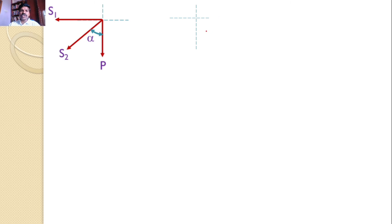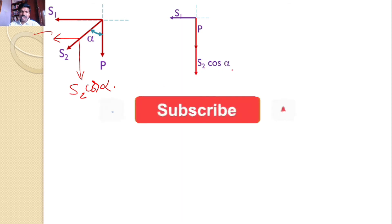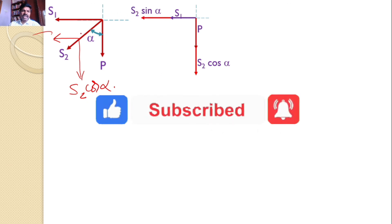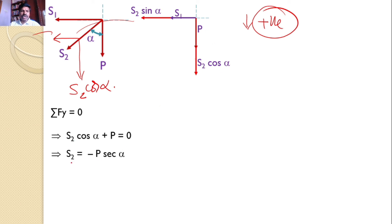Let us resolve all forces onto the x and y axes. P is vertical — no need to resolve. S1 is horizontal along the x-axis — also no need to resolve. S2 is inclined, so we resolve it: the y-component is S2 cos α and the x-component is S2 sin α. Now consider ΣFy = 0. Taking downward as positive, since both forces along the y-axis are downward.